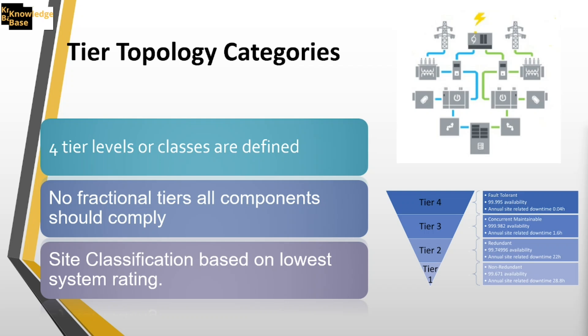Data center tiers provide a concise way to convey essential details about a facility. They establish expectations and set clear parameters for cost, availability, and redundancy. When you hear tier three, you know it's concurrently maintainable, with 99.982% availability and a downtime expectation of 1.6 hours per year. When hiring a co-location data center, if it's tier three you know exactly what quality of service you're guaranteed.